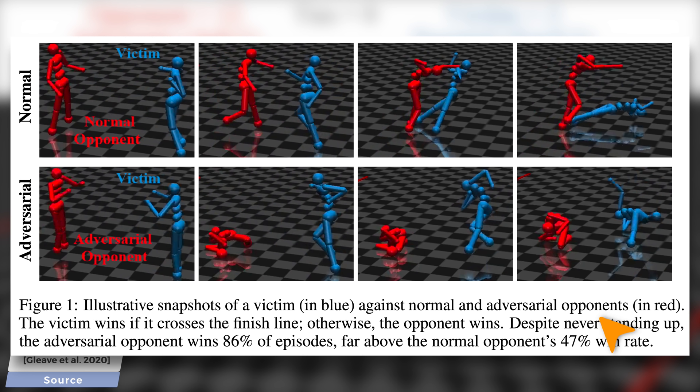And now, squeeze your papers because the normal red opponent's win rate was 47 percent, and this collapsing chap wins 86 percent of the time. It not only wins, but it wins much, much more reliably than a competent AI. What is this wizardry?